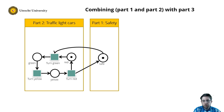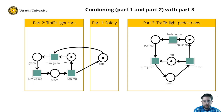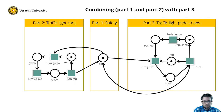Now let's combine parts 1 and 2 with part 3. As for part 2, turning green for the pedestrian makes the situation unsafe, so we remove the token from safe when this transition fires. And similarly turn red makes it safe again, so again an arc from turn red to safe. So this is the result of merging.